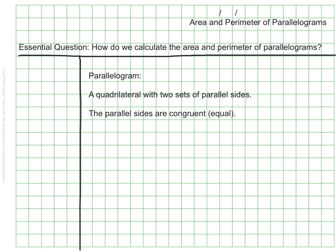A parallelogram might look like this. We can see here the top side and the bottom are the same — they have the same tick mark as a code to show that they are the same length. They are also parallel. And these two sides, using a different tick mark, are also congruent — they're also equal length, and they are also parallel.